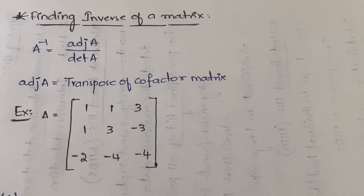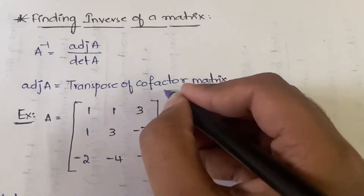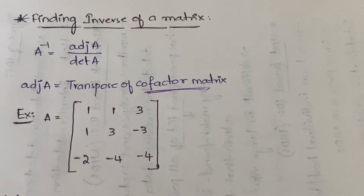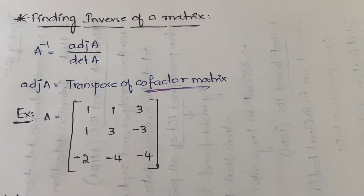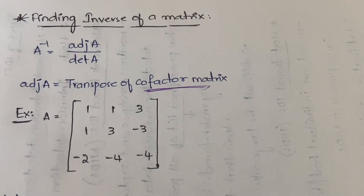In order to calculate the adjoint of a matrix, you have to first find out the cofactor matrix. You need to find the cofactor matrix first, then perform the transpose operation. If you do the transpose operation, you will get adjoint A. Adjoint A divided by det(A) will give you A inverse.